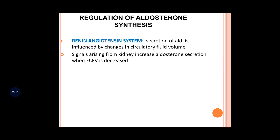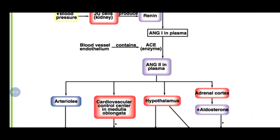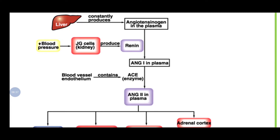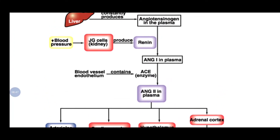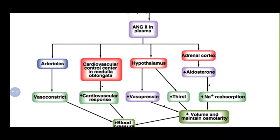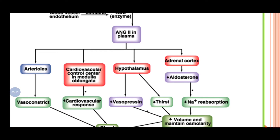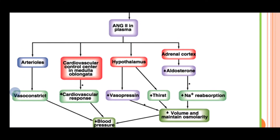Regarding regulation of aldosterone synthesis: the renin-angiotensin system regulates blood pressure in the kidney. Angiotensinogen is produced from the liver, converted to angiotensin 1 by renin, and then converted to angiotensin 2 by the ACE enzyme. Angiotensin 2 causes vasoconstriction of arterioles, increases cardiovascular responses, increases heart contractility, and in the hypothalamus increases vasopressin secretion.